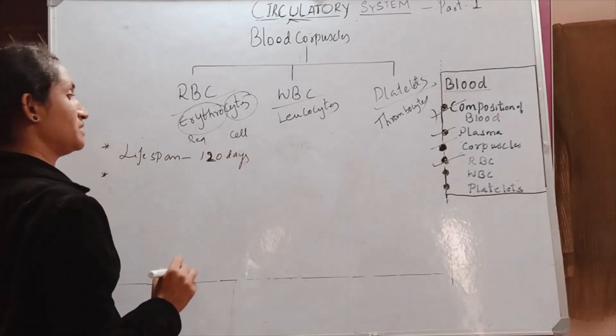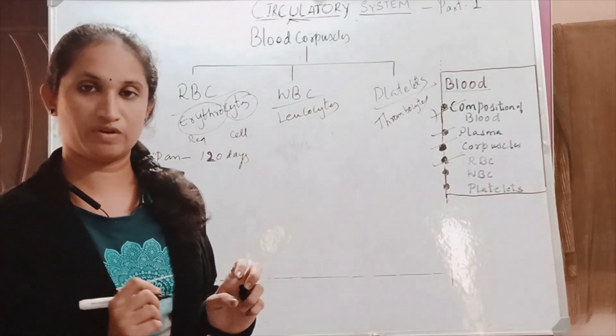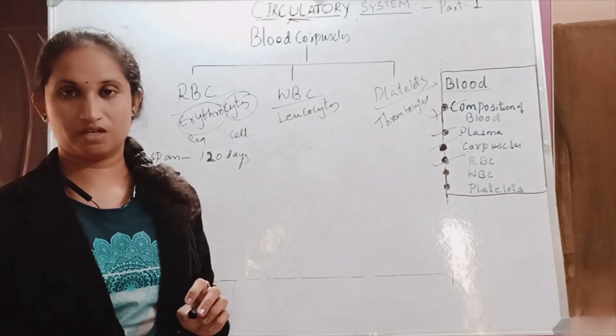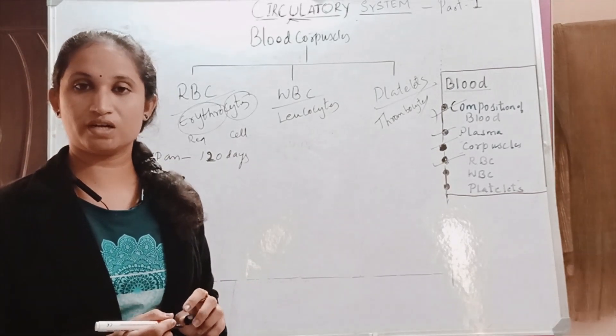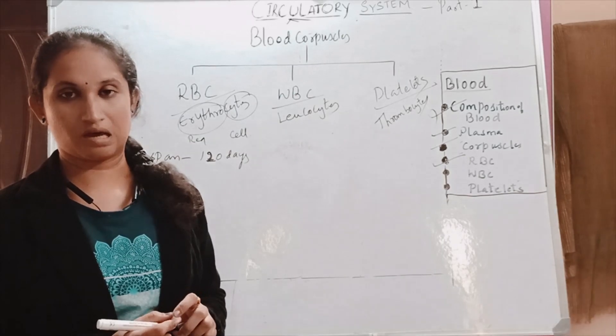What happens to the RBC cells after 120 days? After 120 days they will be destroyed in the spleen and the liver.